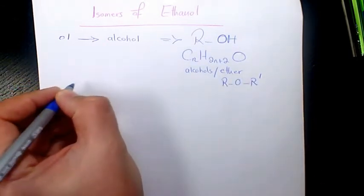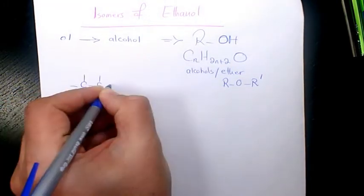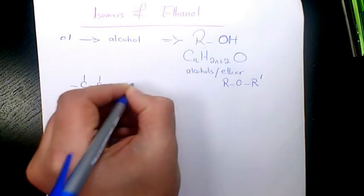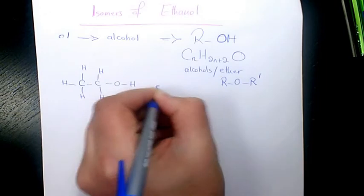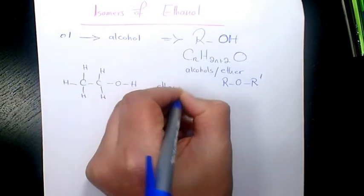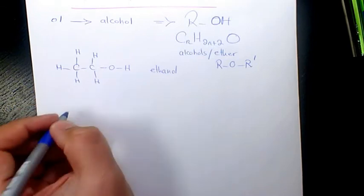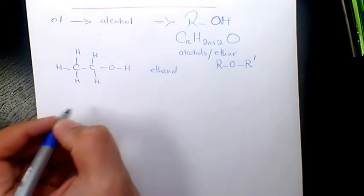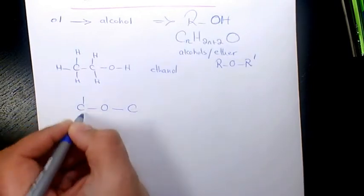We can say for ethanol, which will be something like that. And the other isomer is gonna be dimethyl ether, which will be C connects to another oxygen, and then we have another carbon.